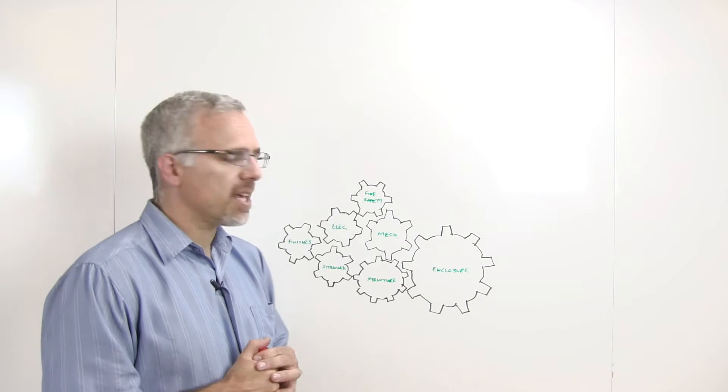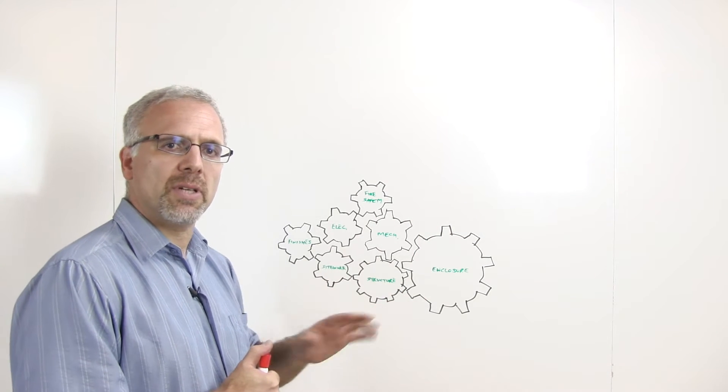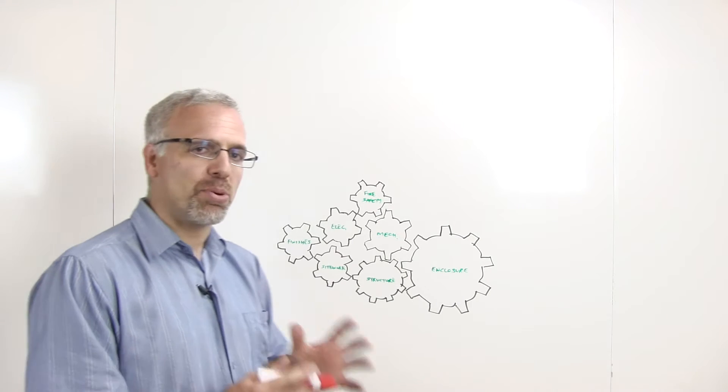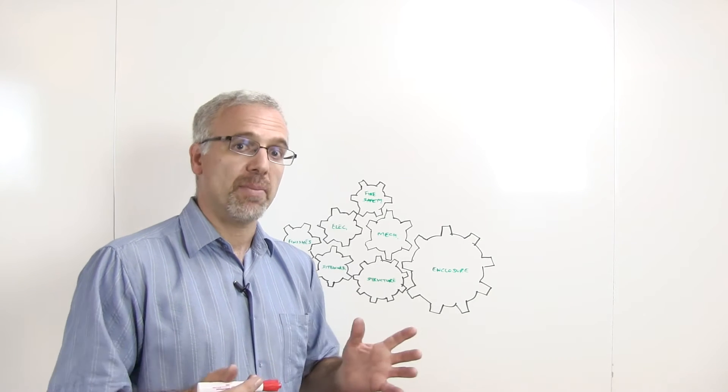Now, on the whiteboard behind me, I have put together a summary conceptual illustration using mechanical cogs to indicate the eight primary physical systems of every building.